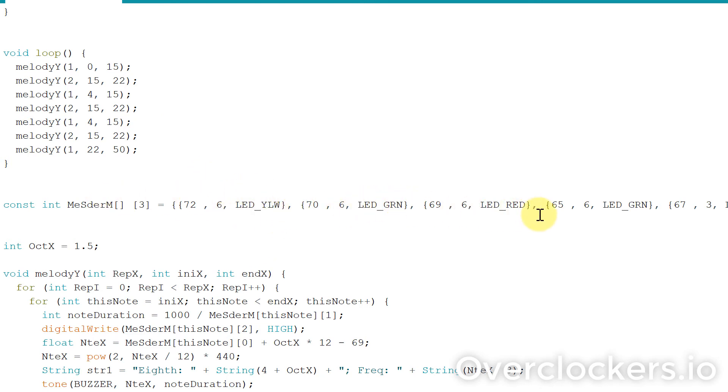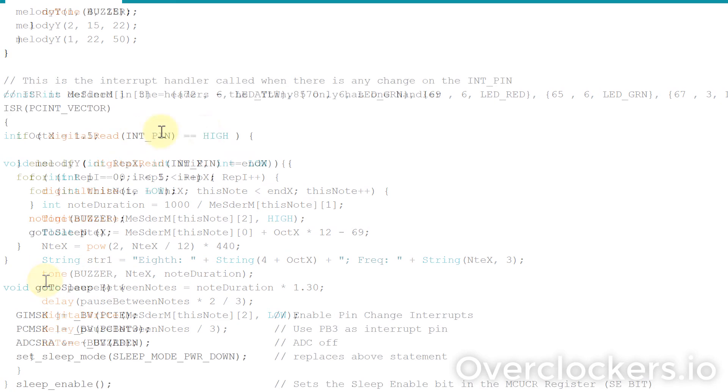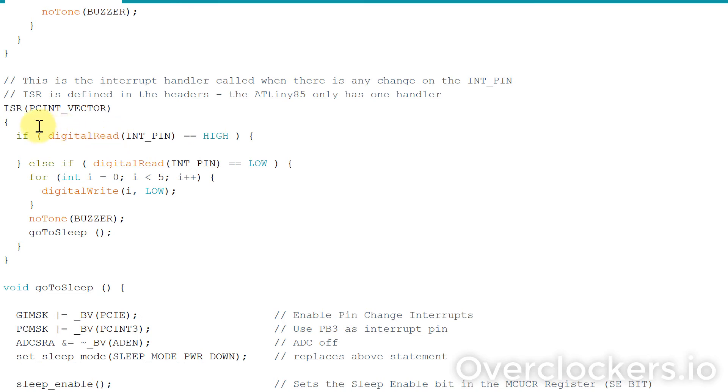This is the melody function that controls the sounds, and the buzzer is controlled with the tone. The ISR PC interrupt vector is the part controlled by the interrupt pin. When the PC interrupt pin is touched or goes high, it continues to run that loop. If it goes to low, it switches off the buzzer and goes to sleep.